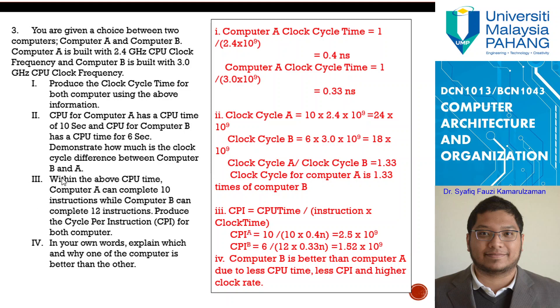Going to number 3, within the above CPU time, computer A can complete 10 instruction, while computer B can complete 12 instruction. Produce the cycle per instruction for both computer. Here it represents how many cycle, clock cycle, how many tick-tocks does it take for it to complete an instruction. In this case, you have cycle per instruction is equal to CPU time divided by instruction time, clock time.